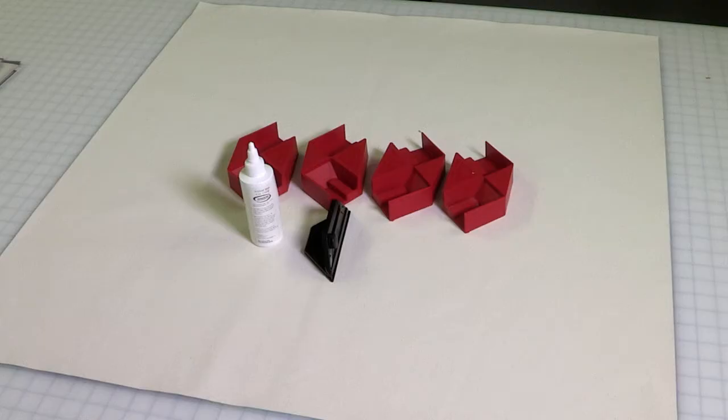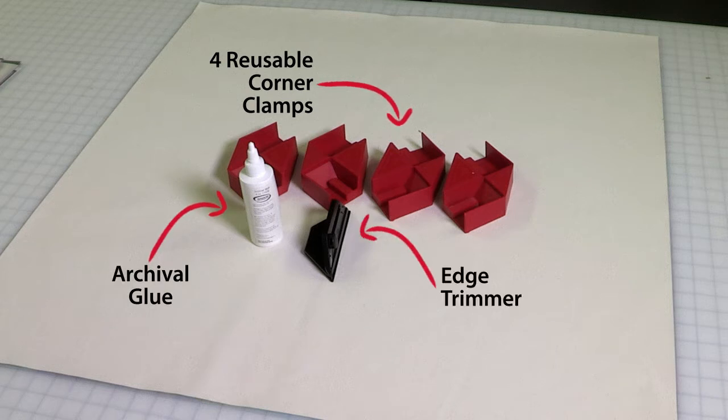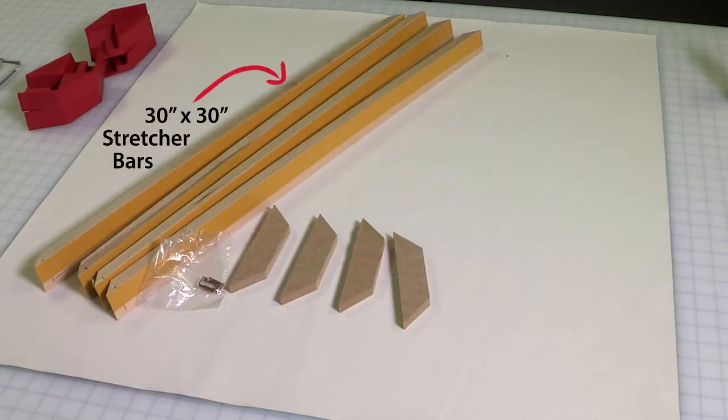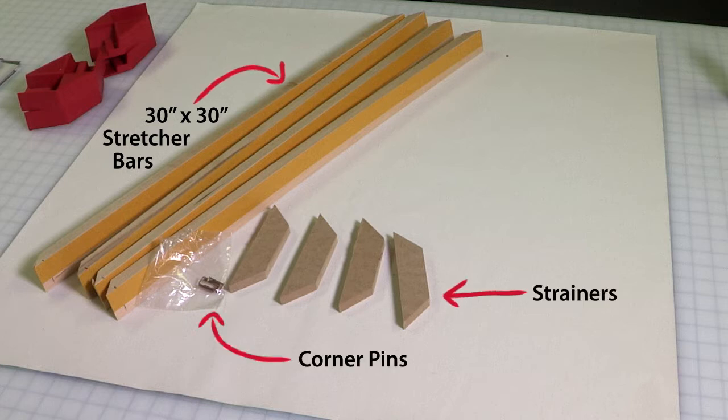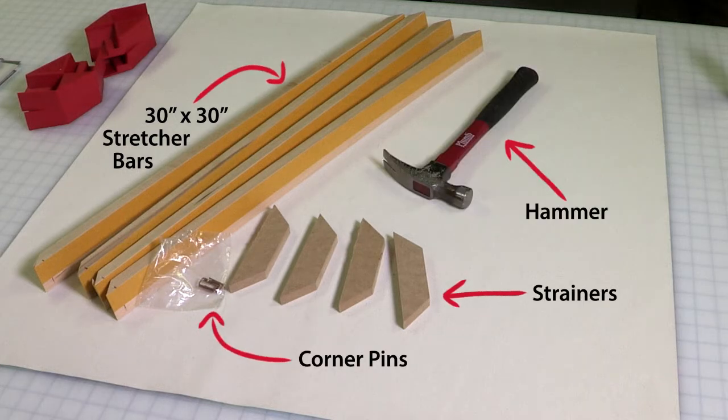The GoFrame starter kit comes with four reusable corner clamps, archival glue, and an edge trimmer. Shown here are 30 by 30 GoFrame stretcher bars with strainers and corner pins. You will also need a hammer.